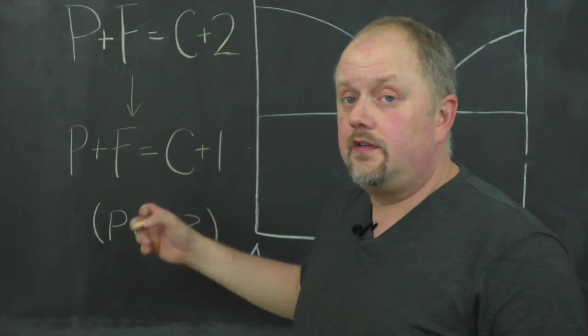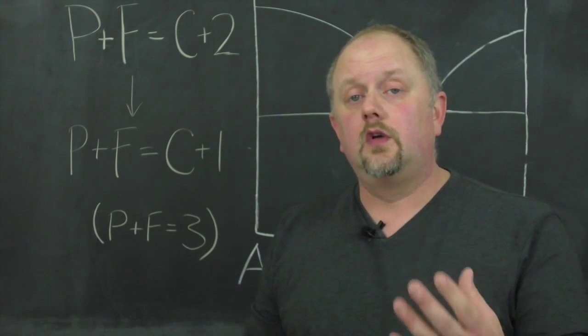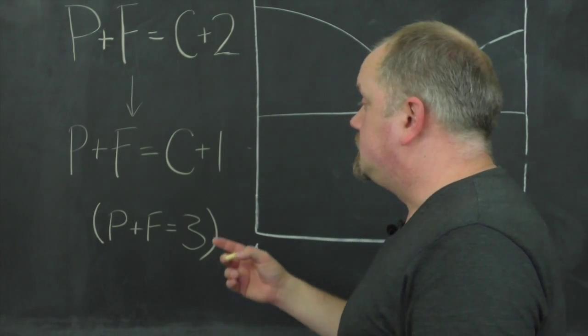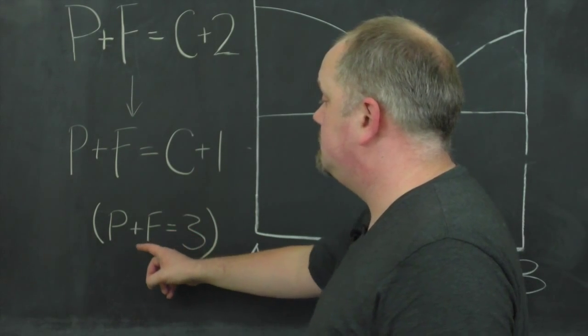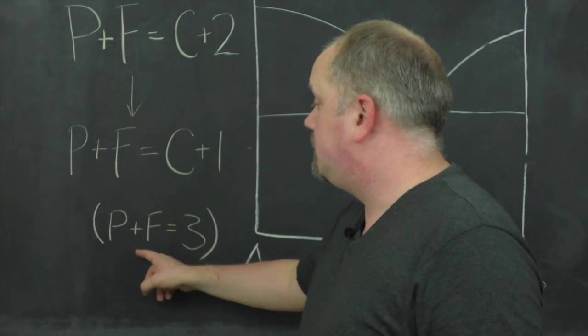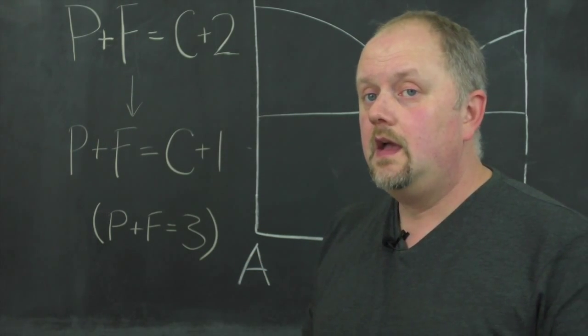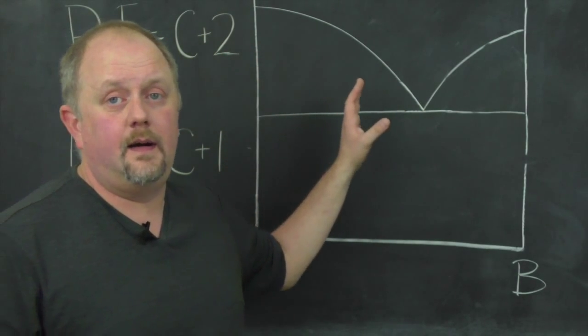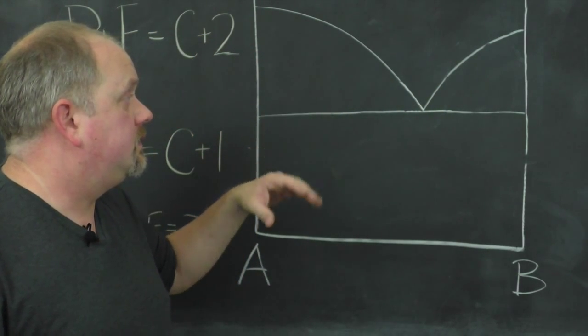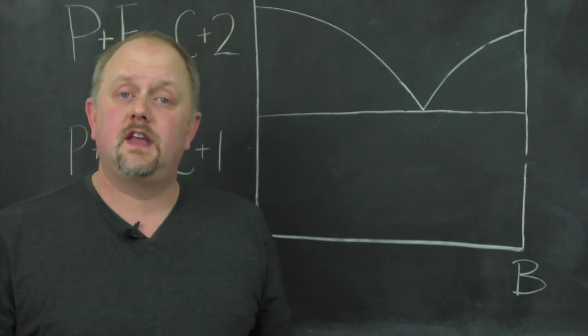But this simplifies further for us because in our systems we're only looking at binary systems. And so C is always going to be 2 because we've got two components. So therefore this simplifies even further for us, P plus F equals 3. So the idea of this is that we can look at any point on our phase diagram and determine whether it makes sense.